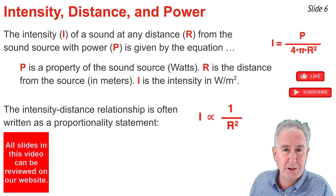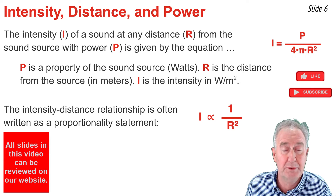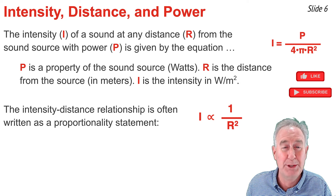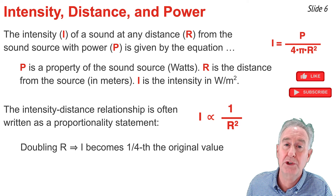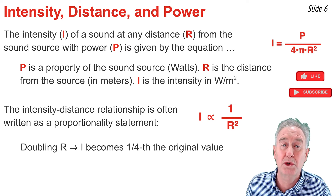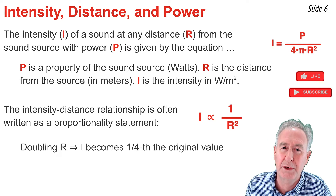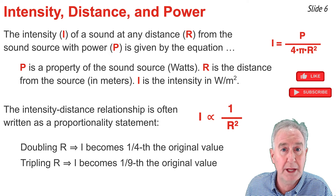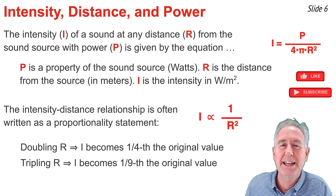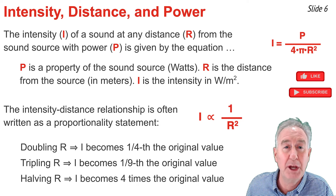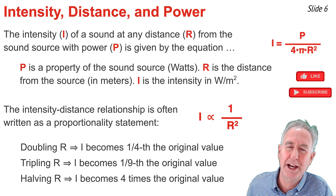From this equation, a few things can be inferred. When r increases, I decreases — they're inversely related — and the factor by which I goes down is the square of the factor by which r goes up. If you double r, the intensity goes down by a factor of 2² = 4, giving one-fourth the original value. If you triple the distance, intensity becomes one-ninth the original value. And if you halve r, intensity increases by a factor of 2² = 4, giving four times the original value.